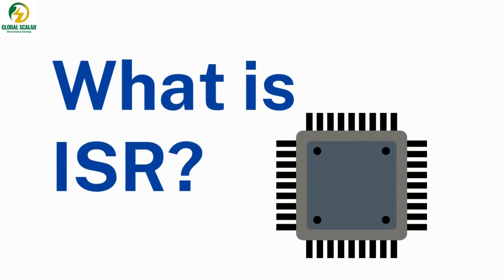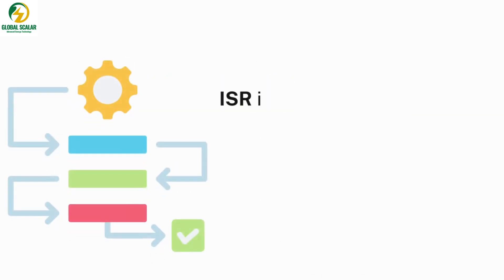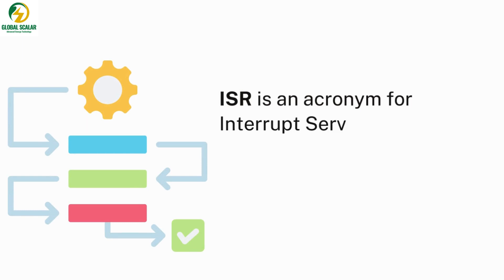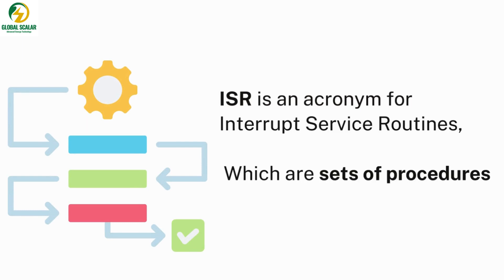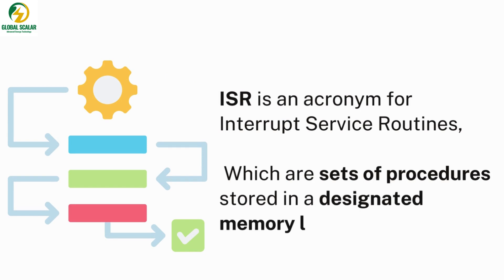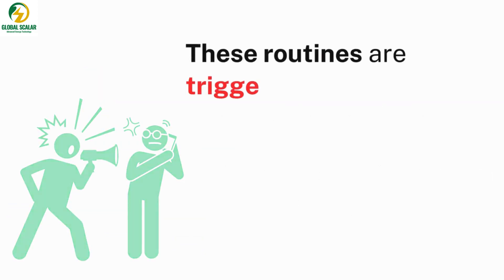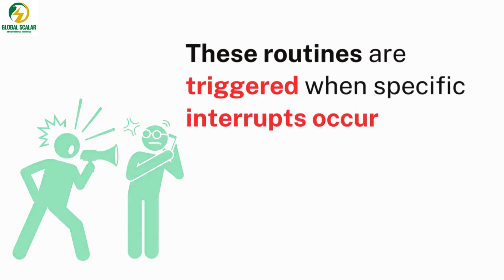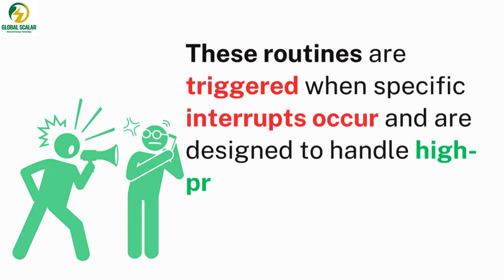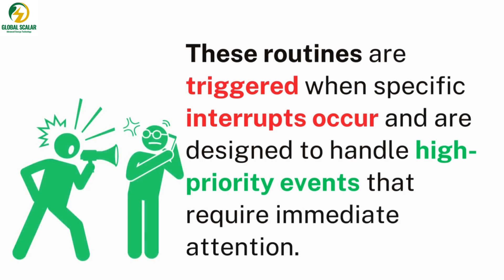What is ISR in Embedded System? ISR is an acronym for Interrupt Service Routines, which are sets of procedures stored in a designated memory location. These routines are triggered when specific interrupts occur and are designed to handle high-priority events that require immediate attention.